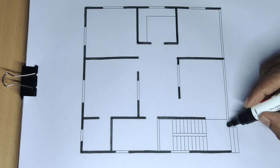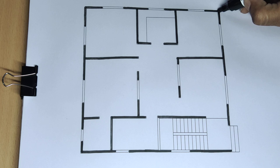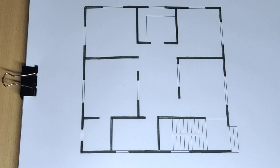This is a 3BHK house plan with 3 bedrooms. It includes dining, drawing, kitchen, and toilet. Everything has been added.